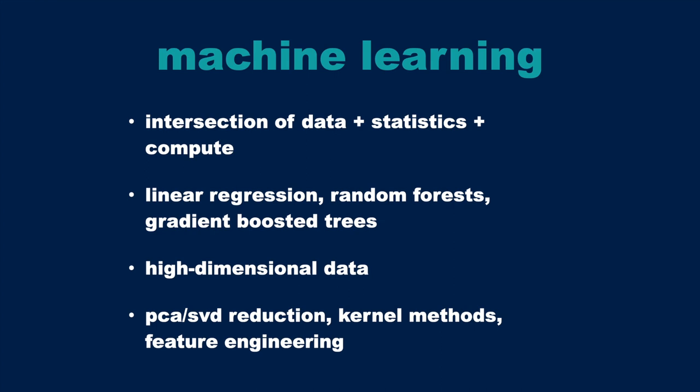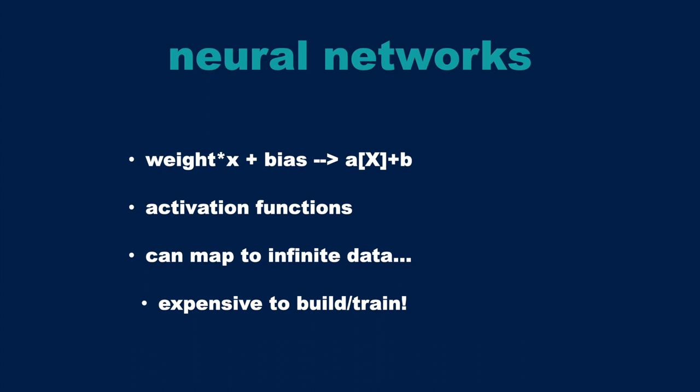Everything discussed so far was roughly the state of the art as of the year 2000. Today we're talking about neural networks, which have become very popular in recent years. Conceptually, the basic form of a neural network is just a mathematical function: it takes a weight times an input and adds a bias variable — literally ax + b. By combining many individual neurons together with activation functions, we can map to essentially infinite data. The problem is that neural networks are really expensive to build and train, which is why historically they haven't been used as much.